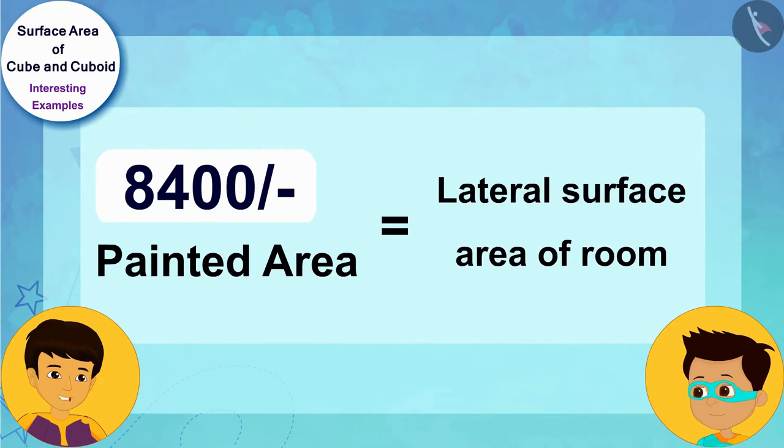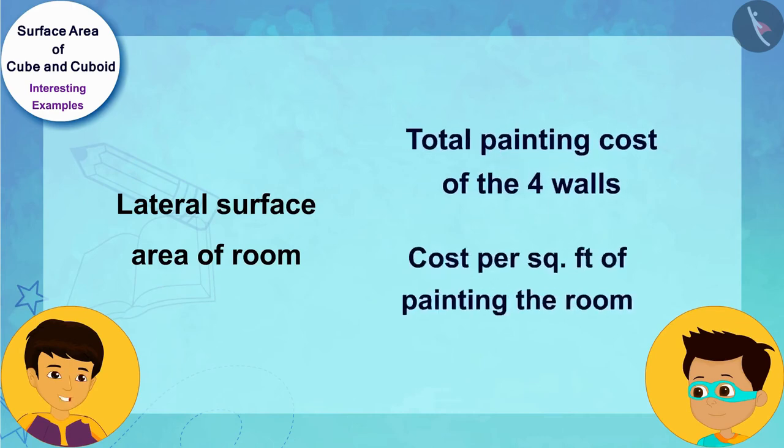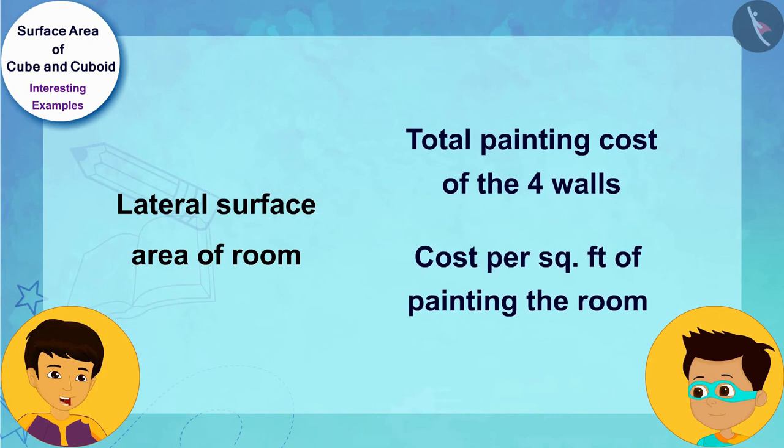To find the lateral surface area of a room we only have to divide this cost at the rate per square foot that you paid for the color. Therefore, the lateral surface area of this cuboid room is 8400 divided by 10 or 840 square feet.